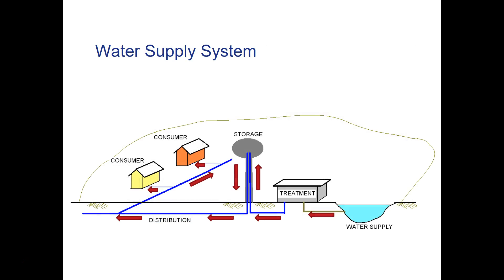A basic water supply system starts with a water supply somewhere — it can be on the surface, below the surface, or from a water tower. That water goes through a treatment process to clean it, sometimes using UV light, sometimes chemicals, or combinations of different methods. After treatment, it can be pumped into a storage tank. Here in Ephrata, storage tanks are located around the area in Akron and Lincoln. Those tanks hold water and help keep pressures up because they're stored up high, and then the water flows downhill to consumers.